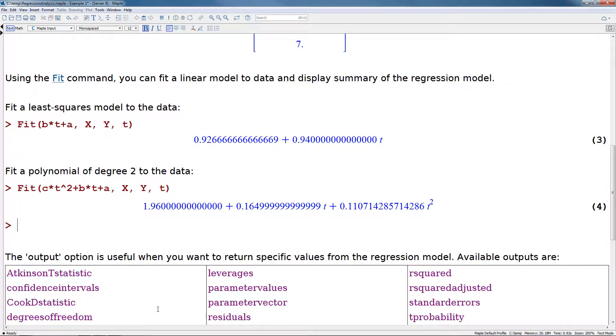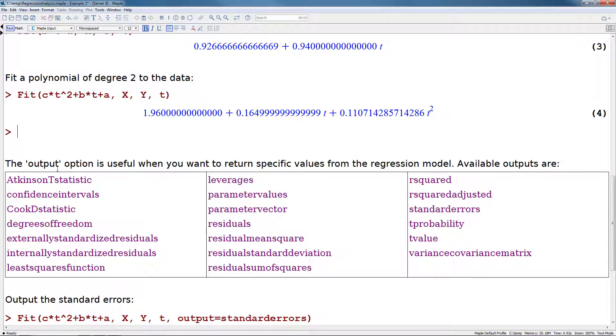Now we can get a lot more information from the fit command. The output option is very useful when you want to return specific values from the regression model. Some available outputs include confidence intervals, degrees of freedom, parameter values, parameter vector, residuals. You might also want things like the r squared or the adjusted r squared. There's a lot of different information that we can get back from the regression model.